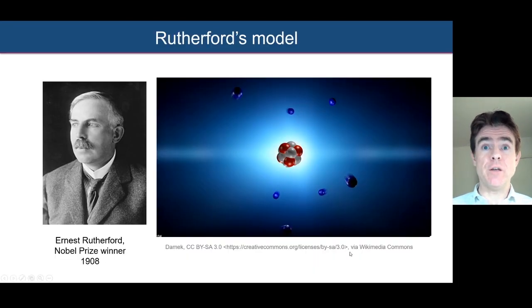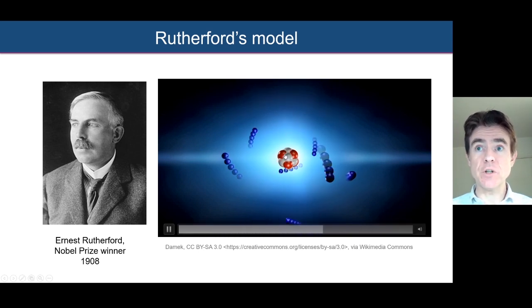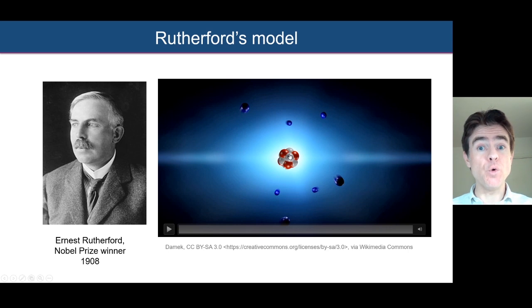We'll start with looking at the classical picture from the Rutherford model of the atom, where we have this densely packed nucleus containing nearly all of the mass of the atom, and then we have the electrons orbiting.